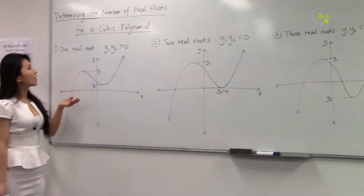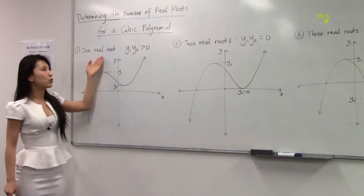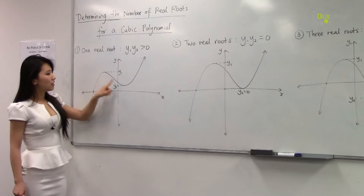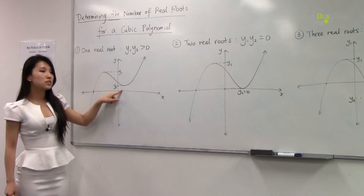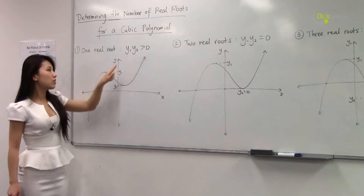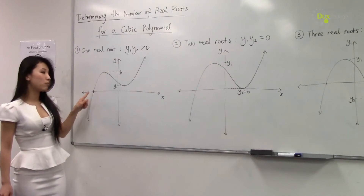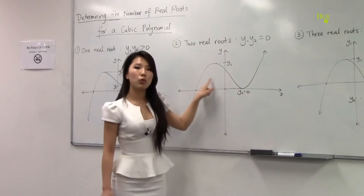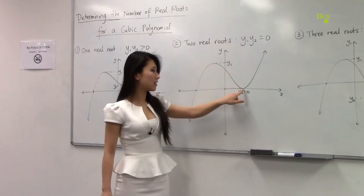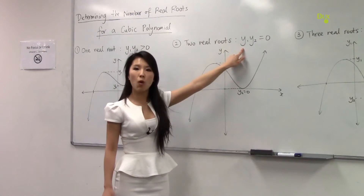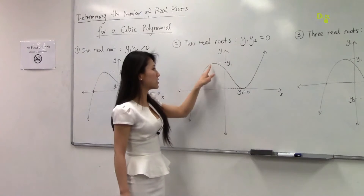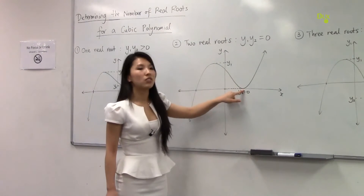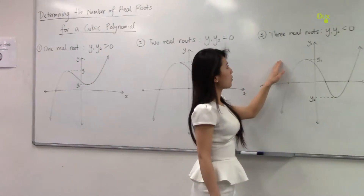In situation number one, if you want to have one real root, then the product of the y-values of the stationary points must be greater than zero. In situation number two, in order for a cubic polynomial to have two real roots, the product of the y-values of the stationary points must equal zero, because one of the roots, which is a stationary point, is on the x-axis.